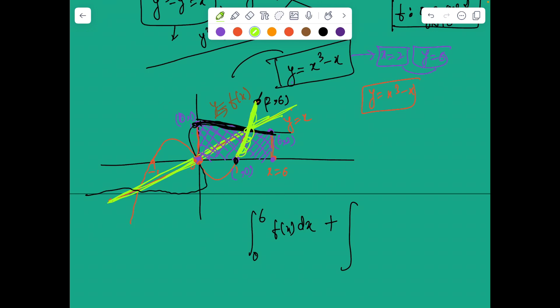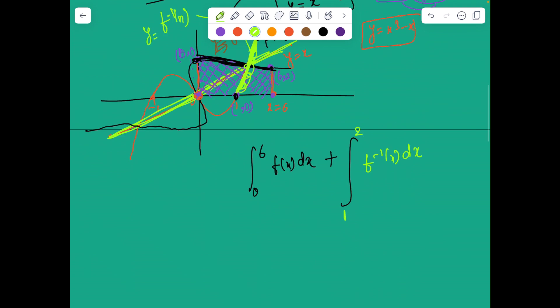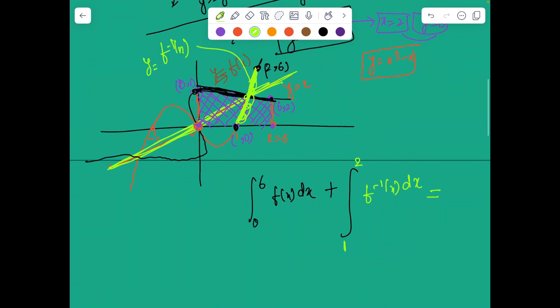So from 0 to 1, f of x. At f of 0 I'm getting 1, f of 6 is 2. F inverse of x dx. And this we have discussed already in the previous lecture because the area bounded by the graph from f inverse from 1 to 2 plus area bounded by the original function from 0 to 6...